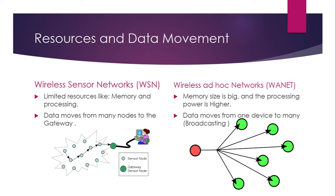Resources and data movement: in wireless sensor networks, resources are small and limited compared to wireless ad-hoc networks. In ad-hoc networks — like our laptops — we have RAM in gigabytes and memory in terabytes. In wireless sensor networks, everything is limited in terms of memory size and processing power.